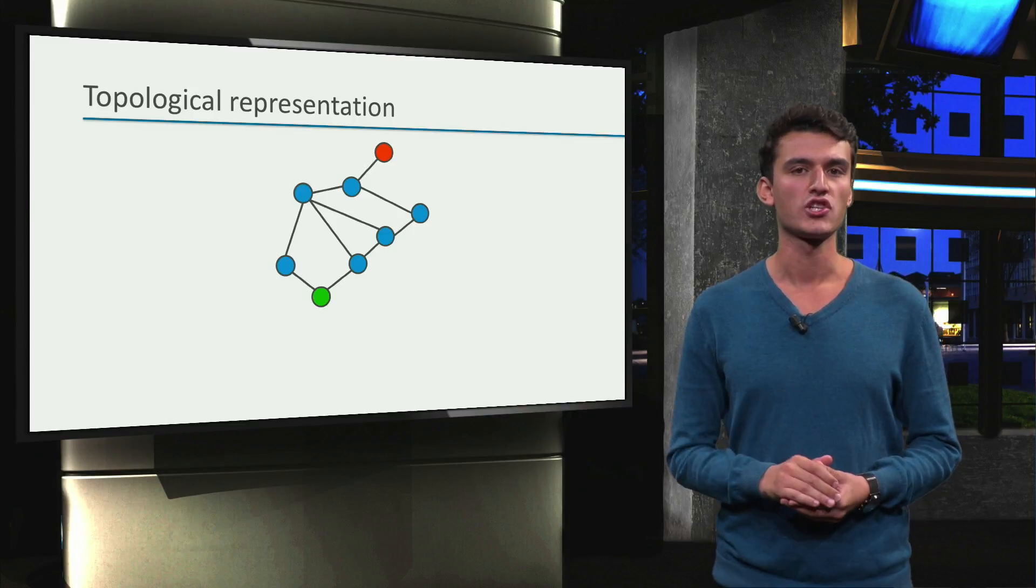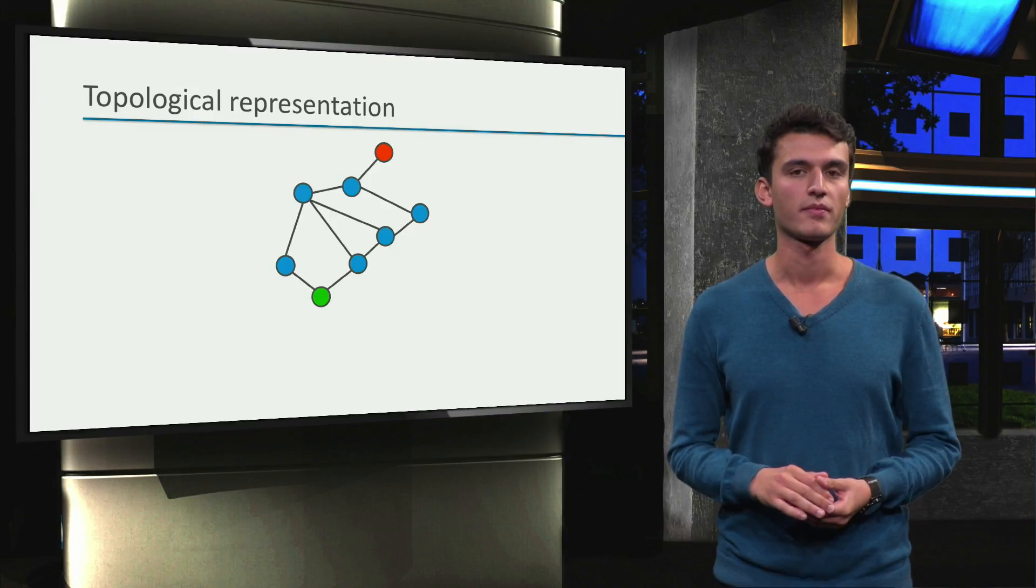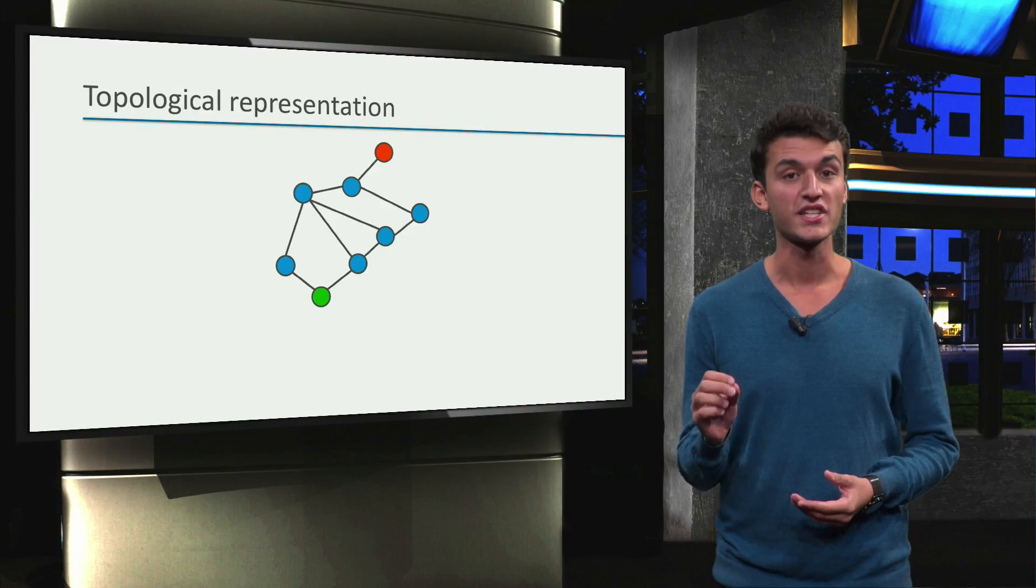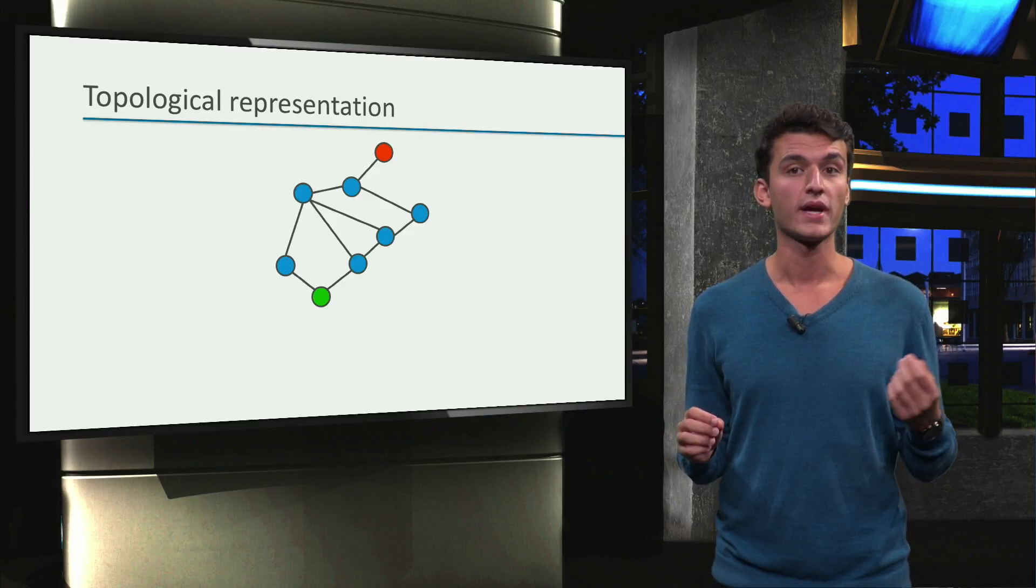Here we have a topological representation of a map. You can think of the subway example, for instance. Every circle resembles a station. We start at the green station, and we want to get to the red one.